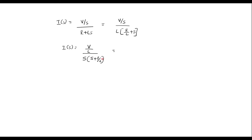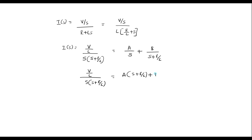I will simplify this using the partial fraction method. It can be represented as A by S plus B divided by S plus R by L. So V by L divided by S times the quantity S plus R by L equals A times the quantity S plus R by L plus B times S, all divided by S times the quantity S plus R by L. Comparing LHS and RHS, V by L is equal to A times the quantity S plus R by L plus B·S.